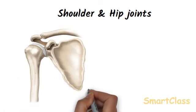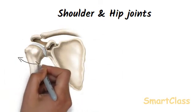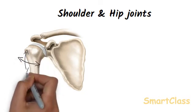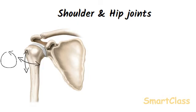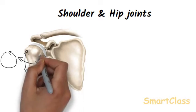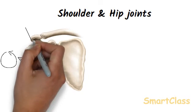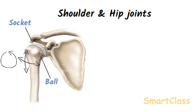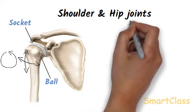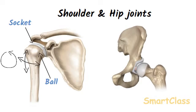If we stand up and move our arm around at the shoulder, we can move it forwards and backwards, from side to side, and also rotate it — this is because the shoulder is a ball and socket joint. The head of the upper arm bone is round like a ball, and the shoulder blade bone has a socket in it. The ball on the top end of the upper arm fits into the socket in the shoulder blade bone to form a ball and socket joint, allowing the arm to move in all directions.